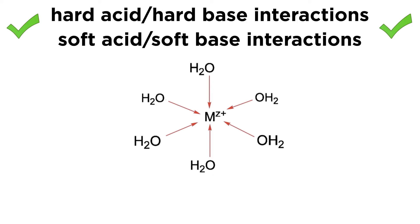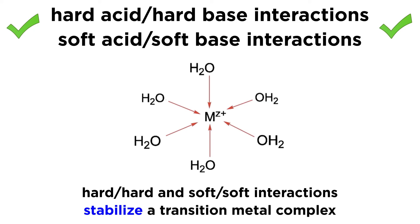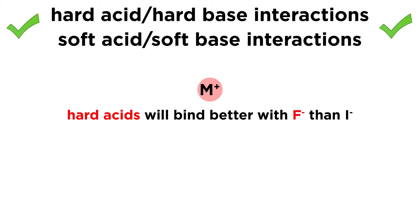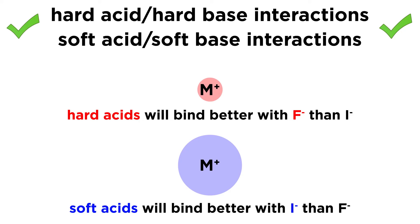The key thing we must understand when applying this framework to metal-ligand interactions is that hard acids interact best with hard bases, and soft acids interact best with soft bases. This means that the stability of a complex is enhanced by hard-hard and soft-soft interactions, so a metal center regarded as a hard acid will bind better with fluoride than iodide, and for a soft acid that trend would be reversed.